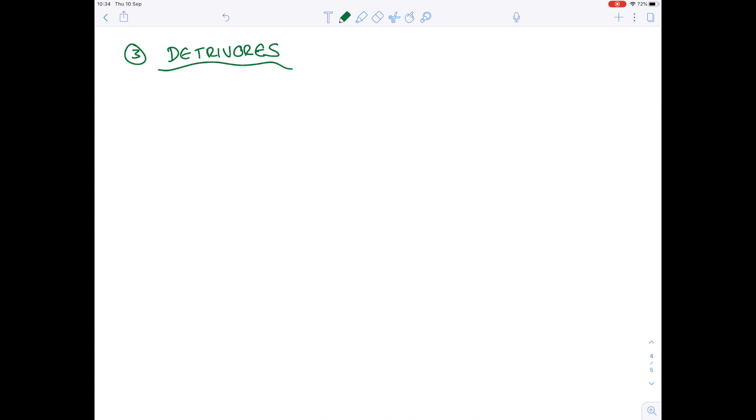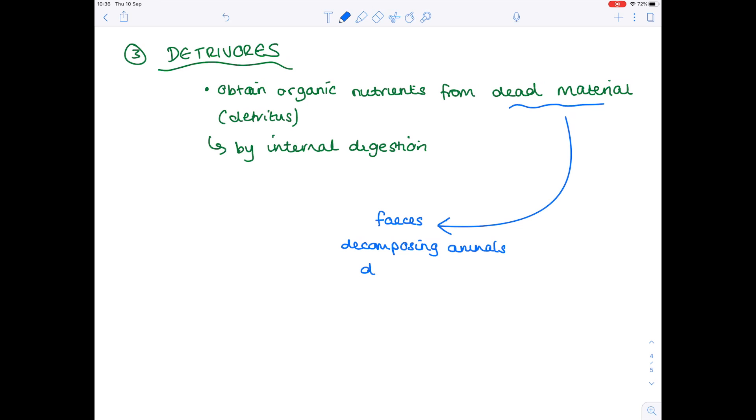And they do that by internal digestion. Dead material is known as detritus. That dead material can include any number of things, such as poo, so feces, decomposing animals, dead leaves.